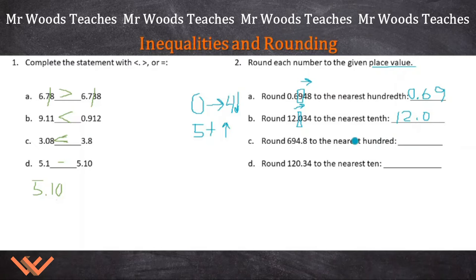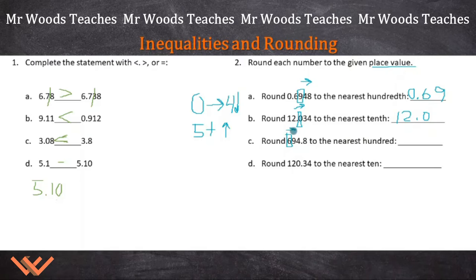Notice how I wrote out the entire number — if there are other numbers to the left, you have to write those down as well. Evaluate C: round 694.8 to the nearest hundred. The hundreds place is here, and we look immediately to the right, which is 9. Since 9 is 5 or greater, we round up: 6, 7 — so this becomes 700.